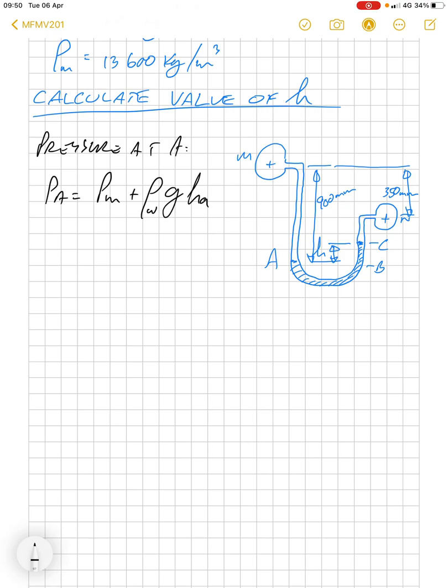And the pressure at B is the pressure at N plus ρ for mercury g H plus ρ for water g H.